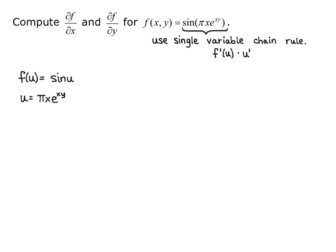Our goal is to find f prime of u, and then we'll find the partial derivative of u with respect to x, and the partial derivative of u with respect to y. So f prime of u equals cosine of u, and plugging the u function back in, that equals cosine of pi x e to the xy. That's our f prime u, which gets multiplied by the derivative of the inside function.